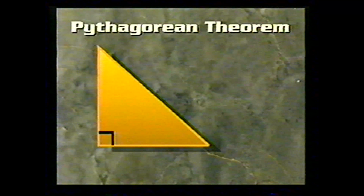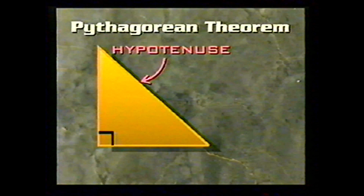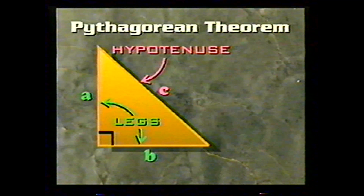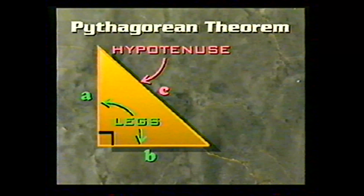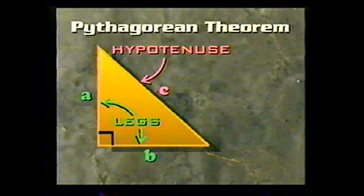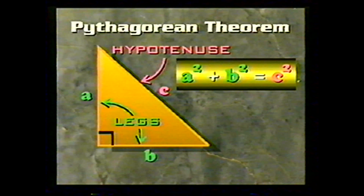First, we have some definitions. In a right triangle, the side that is opposite the right angle is called the hypotenuse. The other two sides are called the legs. The Pythagorean theorem says that the square of the length of the hypotenuse is equal to the sum of the squares of the lengths of the two legs. In this figure, we have labeled the hypotenuse C and the two legs A and B. The theorem can be stated as A squared plus B squared equals C squared.